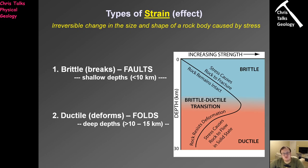In the ductile field, temperatures begin to go up, so the rocks are warm. Because the rocks are warm, the minerals become more malleable, and the rocks will be able to flow and stretch and be deformed in a ductile fashion. The strength of the rock has decreased. In the brittle zone, rocks are strong. In the ductile zone, rocks are quite weak — they will flow. Brittle deformation dominates in the brittle zone; ductile deformation dominates in the ductile zone.